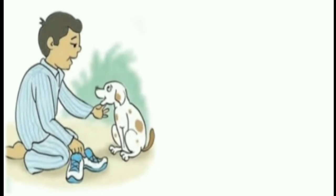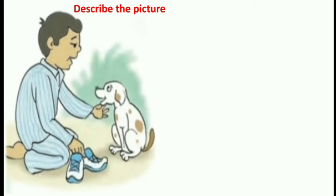Now let us observe this picture here. This is from the lesson which we have just completed. We are going to describe this picture, or you can say we are going to write a composition related to this picture. So look at this picture carefully and let me see if you can already get some sentences that you can write down here.